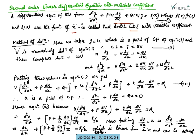The method of solution for this type of equation involves taking y = u, where u is part of the complementary function (CF). The complete solution is y = u·v. Since y = u·v, differentiating with respect to x gives dy/dx = v·(du/dx) + u·(dv/dx). Similarly, we can find d²y/dx².